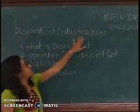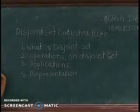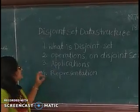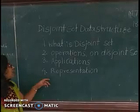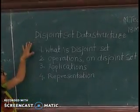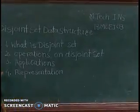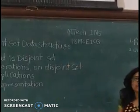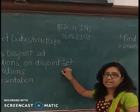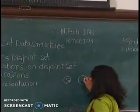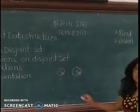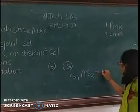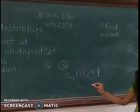Today we are going to learn the disjoint set data structure. The points we will cover are: what is the disjoint set, operations that we can perform on the disjoint set, applications of disjoint set, and representation of disjoint set in various ways. Disjoint set is also called a find and union disjoint set data structure. Disjoint set means there are separate sets S1 and S2 with nothing common between them — that is, S1 intersection S2 equals empty set.